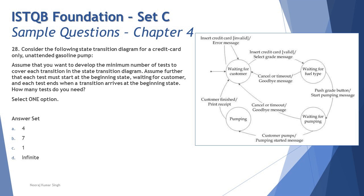Test three is: waiting for customer, waiting for fuel type, waiting for pumping, successfully pumping, then returning to waiting for customer — a successful transaction. We should not forget the fourth one: waiting for customer, insert credit card which is invalid, and it returns directly back to waiting for customer — an error message appears, you remove the card and try again. That's the fourth test. The reason people go wrong is they consider the cyclic process but forget the invalid credit card path.